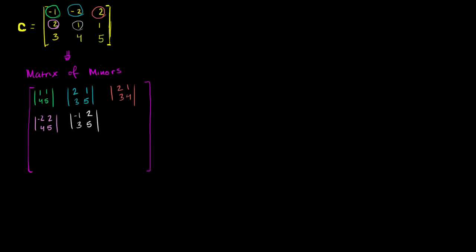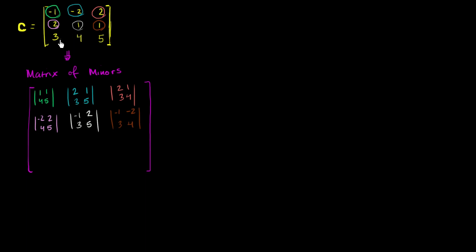Now we move on to this middle-right element, where its minor is found by getting rid of this row and this column — giving us negative 1, negative 2, 3, 4. Let me make sure I didn't lose focus. This row, this column: negative 1, negative 2, 3, 4.